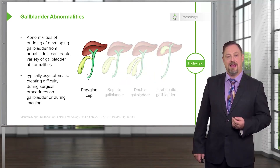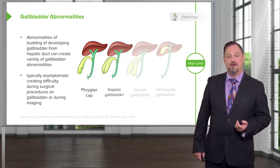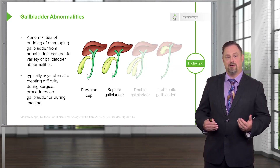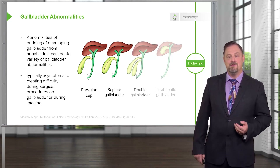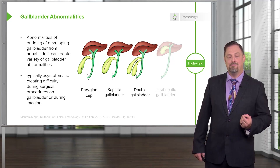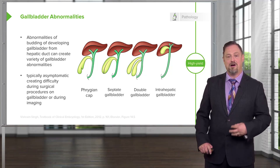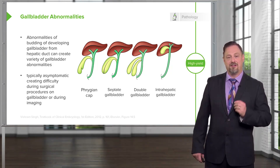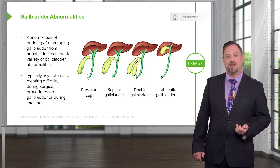Other variants are typically asymptomatic, including a phrygian cap — a small additional bulb off the top of the gallbladder — and a septate gallbladder with an internal wall or septum. You can also have duplication or double gallbladders, which requires the surgeon to be prepared to find two. Occasionally the gallbladder forms so close to the hepatic diverticulum that it is located within or partially within the liver, making removal difficult without lacerating the liver.